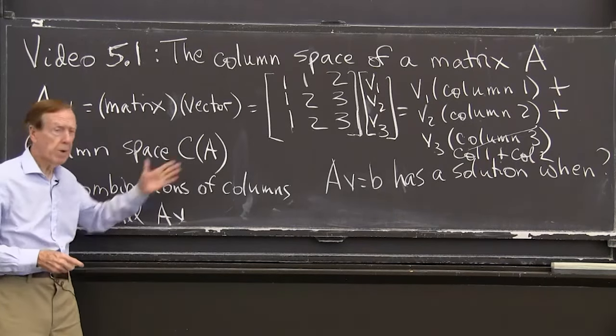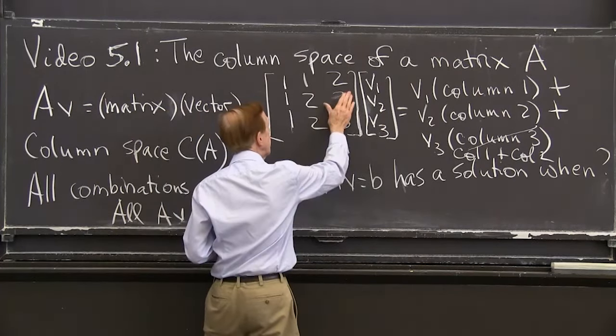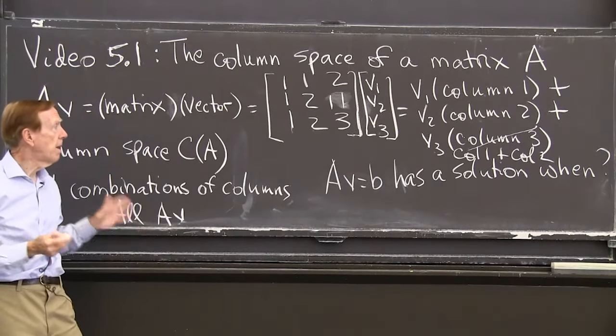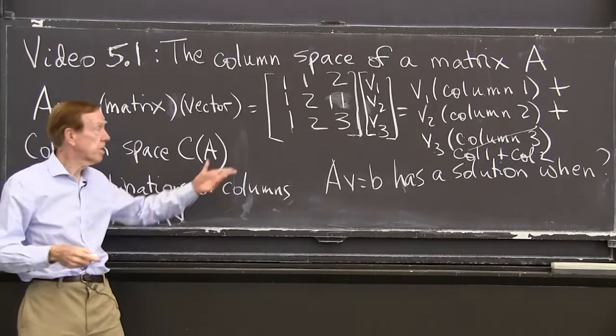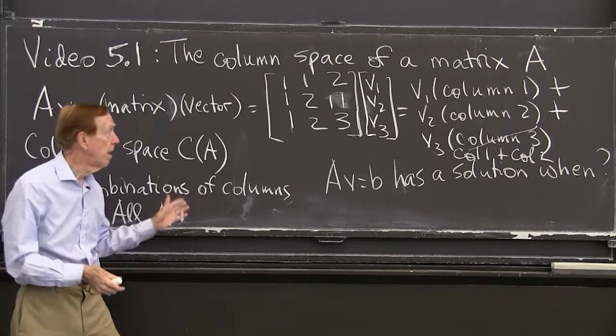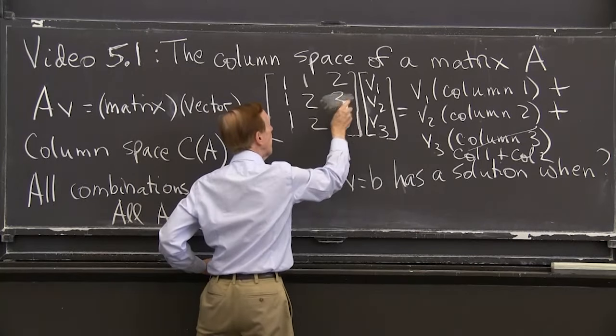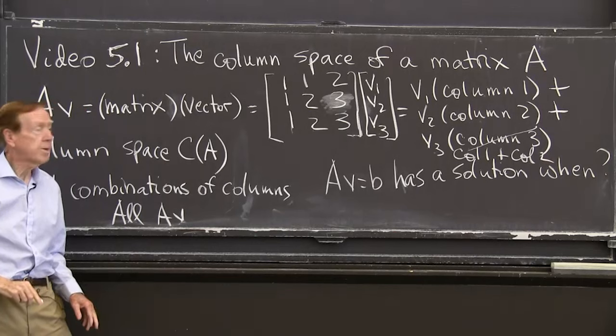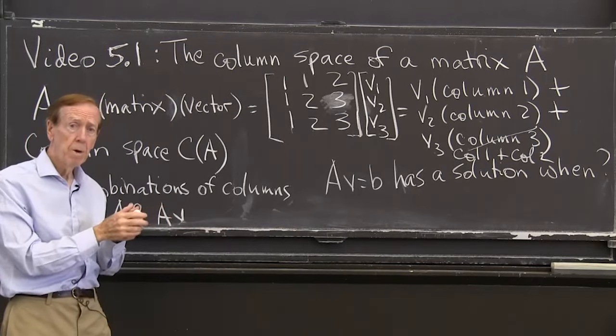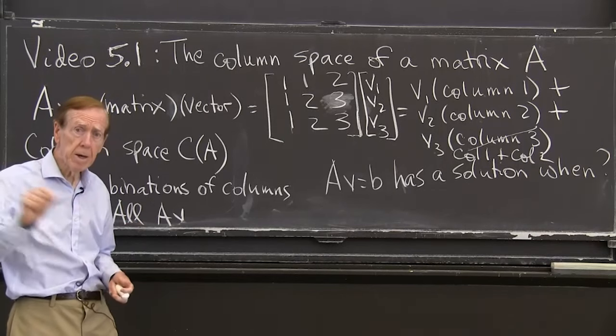And I call that plane the column space. So the column space of the matrix. If you gave me a different matrix, if you change this 3 to 11, probably the column space now changes to, for that matrix, I think the column space would be the whole three-dimensional space. I get everything. But when this third column is the sum of the first columns, it's not giving me anything new, and the column space is only a plane. And you could think of a matrix where the column space is only a line, just one independent column.